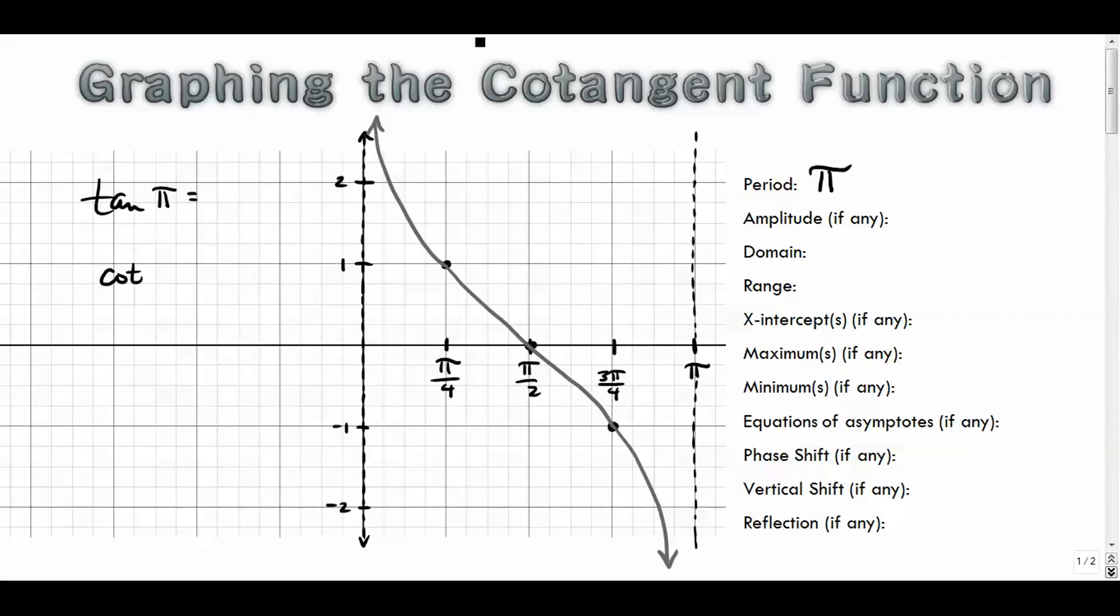So the period is the distance it takes to complete one cycle. So from here to here is π units, just like tangent was. The amplitude, there isn't any, because the amplitude is the height of these things, and it goes on forever. The domain is all real numbers, except where the function does not exist. The function doesn't exist at zero, π, 2π, and so on. So you just put πn, and define n as some integer, some whole number. So when n is zero, x doesn't exist at zero. When n is one, π times one is π.